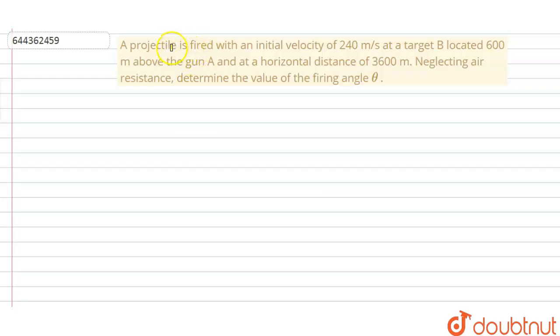Hello dear students, let us read the following question. A projectile is fired with an initial velocity of 240 meter per second at a target B located 600 meter above the gun A and at a horizontal distance of 3600 meter. Neglecting air resistance, determine the value of the firing angle theta.